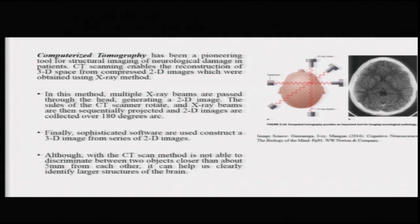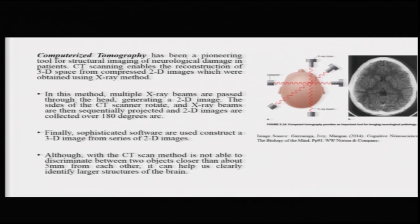The sides of the scanner rotate and X-ray beams are sequentially projected to form 2D images through a 180-degree arc. Sophisticated software and computer technology is then used to reconstruct the 3D images from those 2D images. Although with the CT scan method, we are not able to discriminate areas closer than 5 mm, so it does not have very high spatial resolution, but it can help us get clear pictures of the larger structures of the brain.